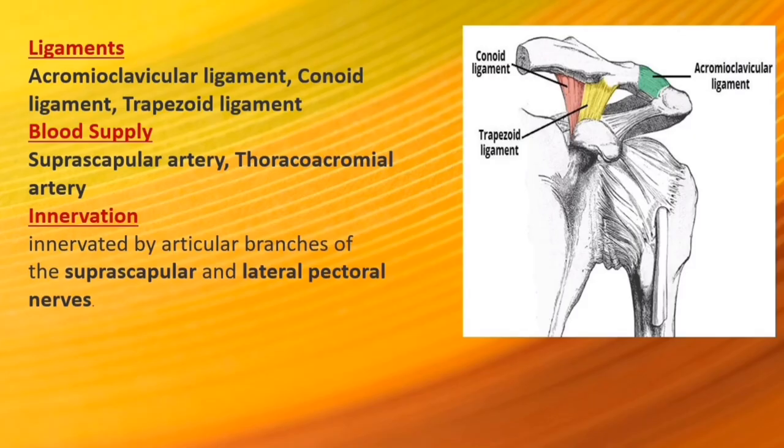There are three main ligaments that strengthen and stabilize the acromioclavicular joint. The acromioclavicular ligament runs horizontally from the acromion to the lateral clavicle, covering and reinforcing the superior aspect of the joint capsule. The conoid ligament runs vertically from the coracoid process of the scapula to the conoid tubercle of the clavicle. The trapezoid ligament runs from the coracoid process to the trapezoid line of the clavicle. The conoid and trapezoid ligaments are collectively known as the coracoclavicular ligament.